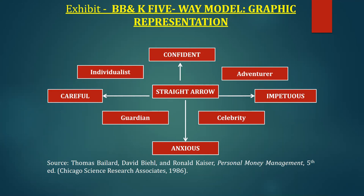These two elements can be thought of as two axes of individual psychology: one is the confident and anxious axis, and the other is the careful versus impulsive axis. The BBK model identifies five investor personality types which can be described in this chart.